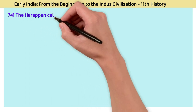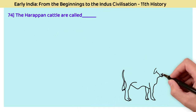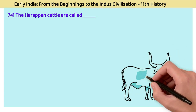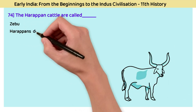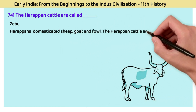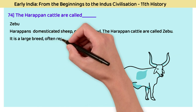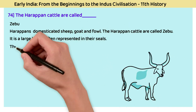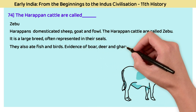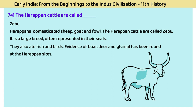Question 74: Harappan cattle are called? The answer is zebu. Harappans domesticated sheep, goats, and fowls. Their cattle are called zebu — a large breed often represented in their seals. They also ate fish and birds. Evidence of boar, deer, and gharial has been found at Harappan sites.